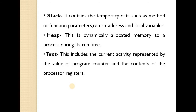The third part is the text section. This includes the current activity represented by the value of the program counter and the contents of the processor registers. Whenever a program is executed, different values are stored in different registers, and this is maintained in the text section of the memory.